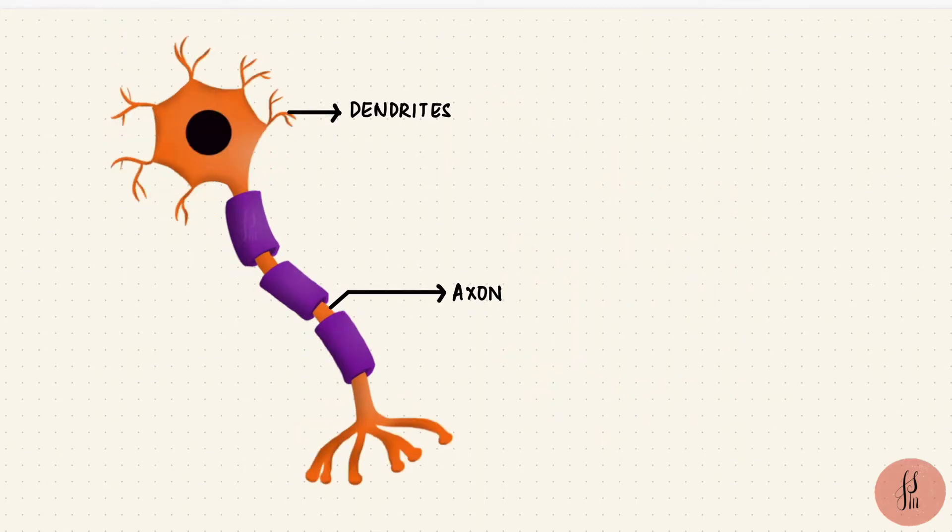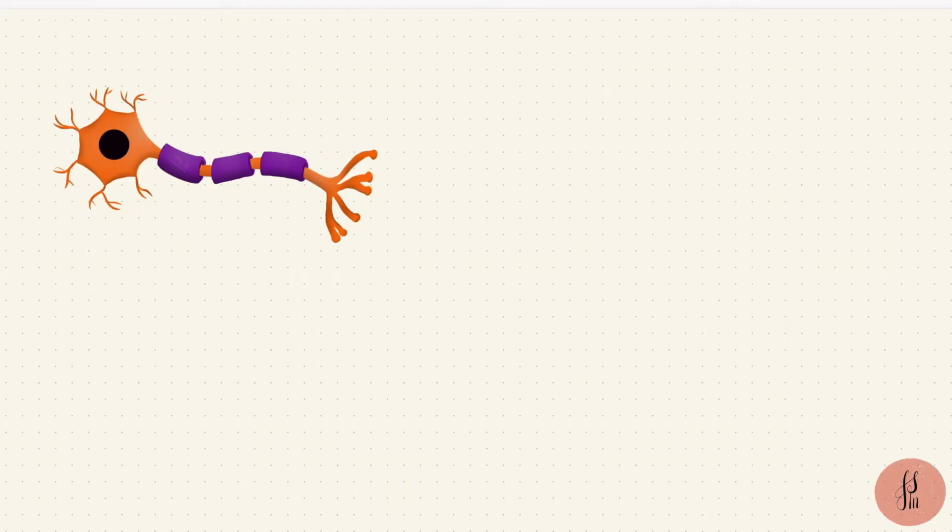The axons end in fine branches called telodendria, and they have knobby endings called synaptic knobs, or terminal buttons. And this is the end of a neuronal cell. It communicates with another cell forming a synapse. That cell could be another neuron, or it could be a muscle or a gland.